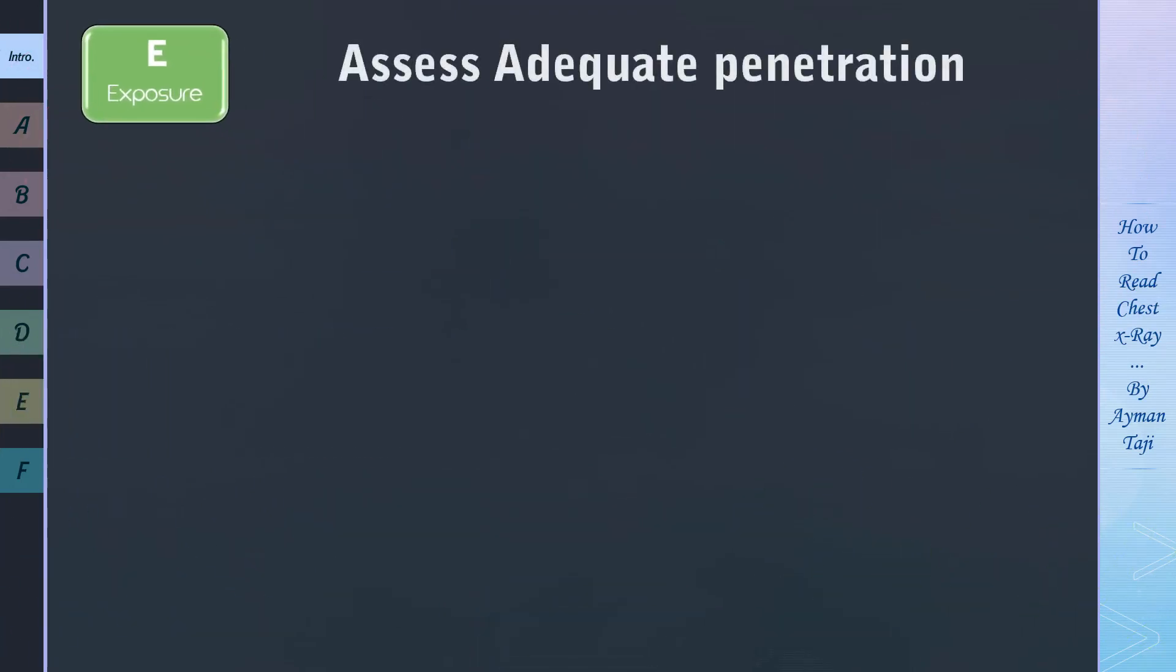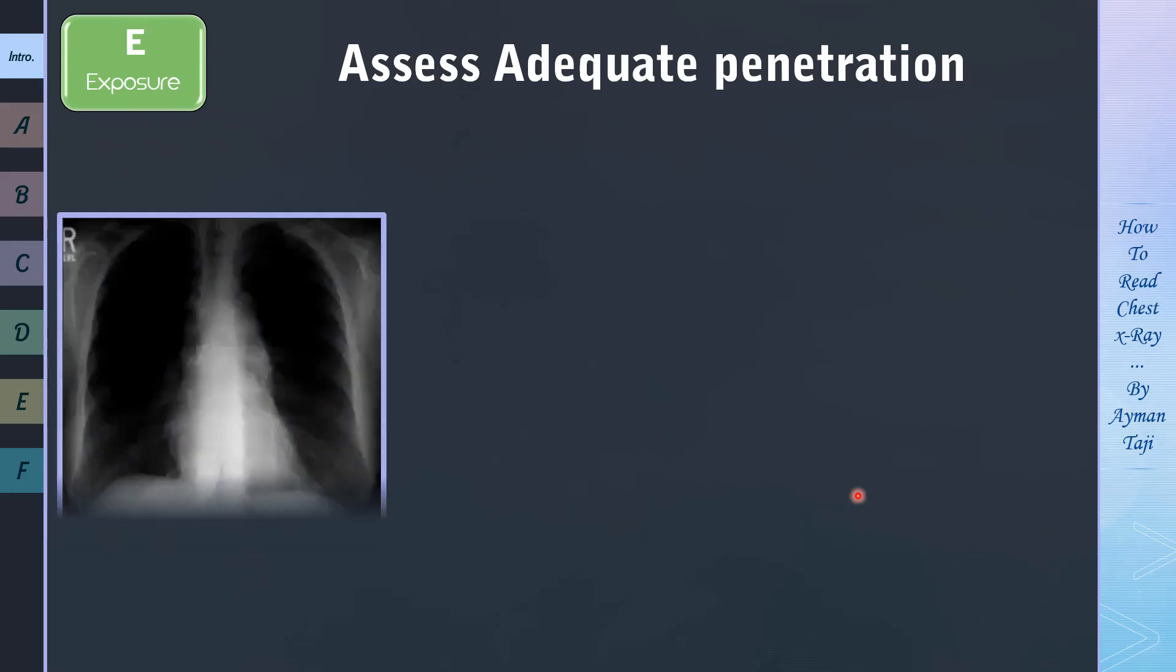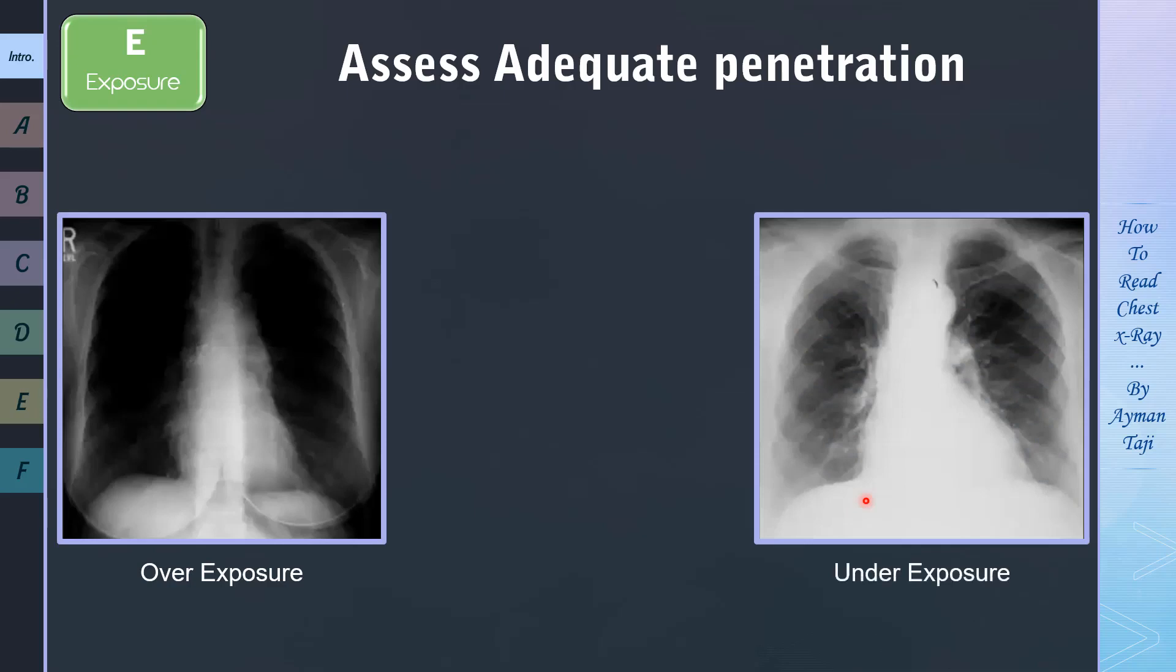Penetration refers to the amount of X-ray that are passing through the area that's being evaluated. And penetration can differ based on the patient's body type. So if a film is overpenetrated like here, that means everything will appear very dark, and that's mimic abnormalities such as pneumothorax. And if a film is underpenetrated, then everything will look whiter, and that can make it very difficult to actually see what's going on in the lungs.